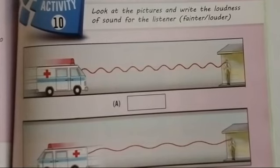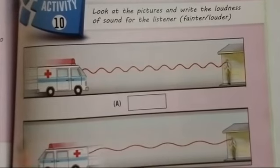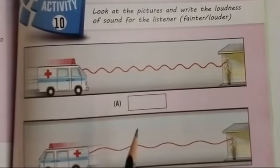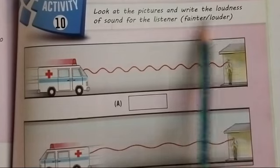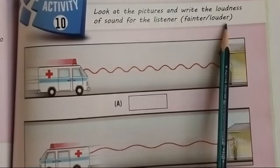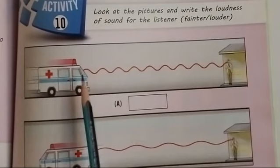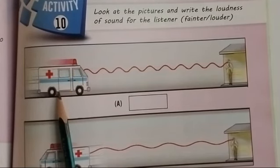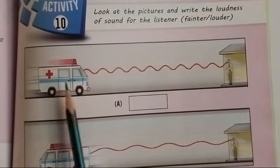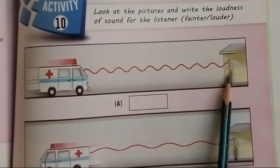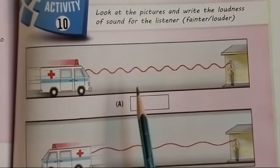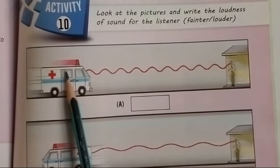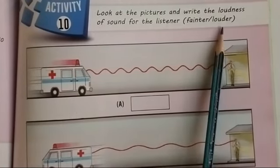Now turn the page and come to page 89. Another activity we have. This is the same activity. You have to identify the sound of loudness and fainter. Activity 10. Look at the pictures and write the loudness of sound for the listener, fainter or louder. Look at the very first picture. The distance is close to the person, so you have to tell us, the sound of loudness is louder or fainter?